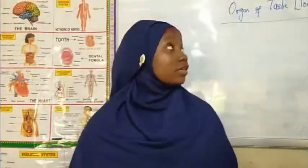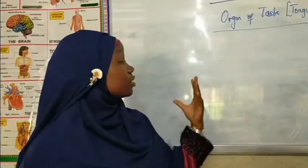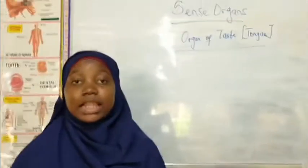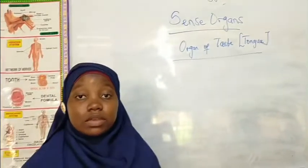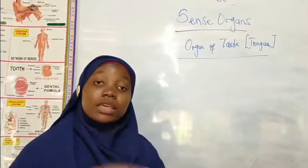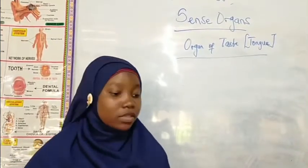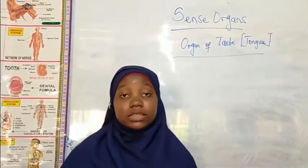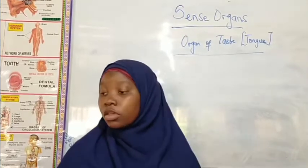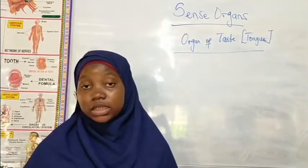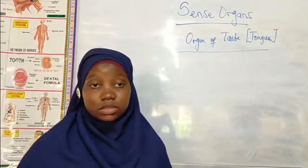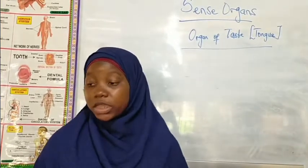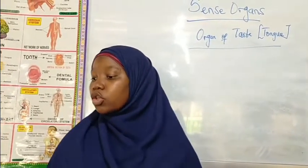Today we are going to continue our discussion on sense organs. In our last class, we discussed the introduction to sense organs, the meaning of sense organs, as well as the major five senses in the body. We also discussed the skin, what it does, and where the nerve endings are located within the dermal layer of the skin.